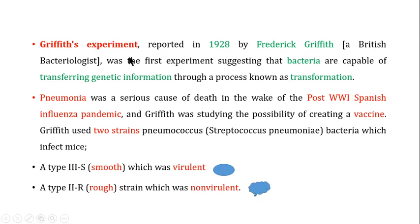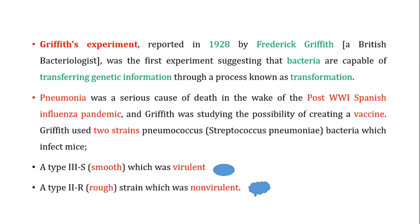The main aim of Griffith's experiment was to make a vaccine against pneumonia in 1928, because pneumonia was a serious cause of death after the post-World War One Spanish influenza pandemic. So Griffith was actually interested in making a vaccine against pneumonia so that people could be prevented from these kinds of infections.